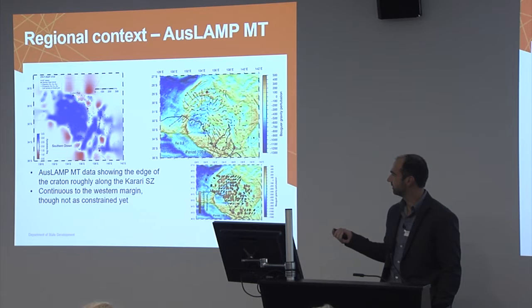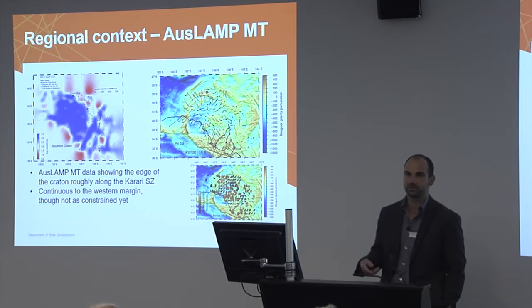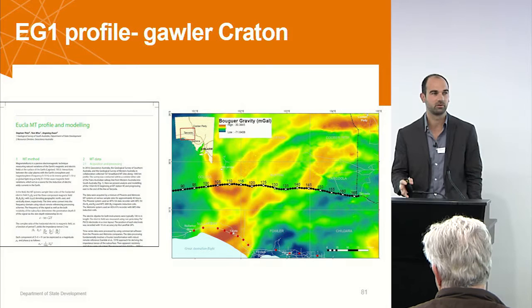You can see the station coverage is quite broad, and what everyone got excited about are these conductive margins of the Gawler Craton — they're really extensive in the IOCG belt. The obvious question is, we have very little data on what happens on the western margin, and that's really what this talk is going to be about.